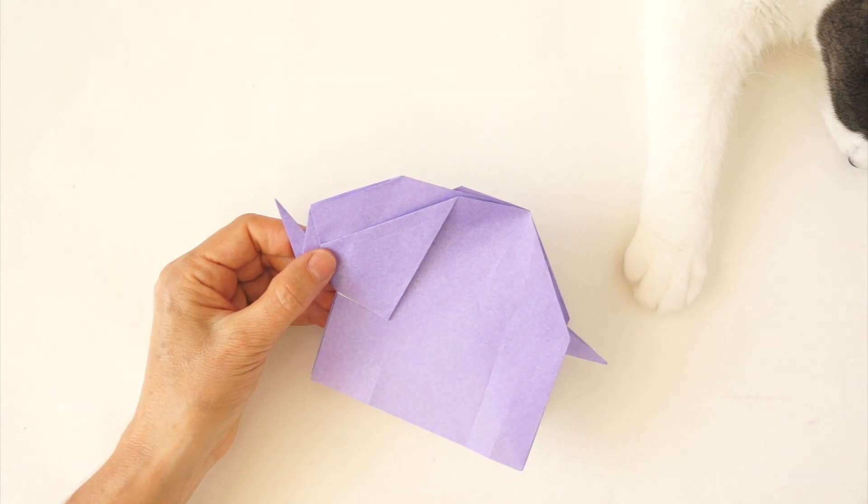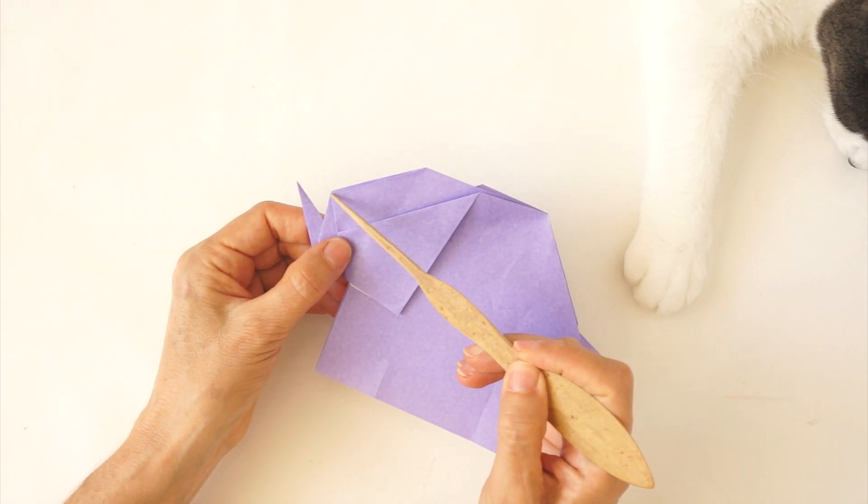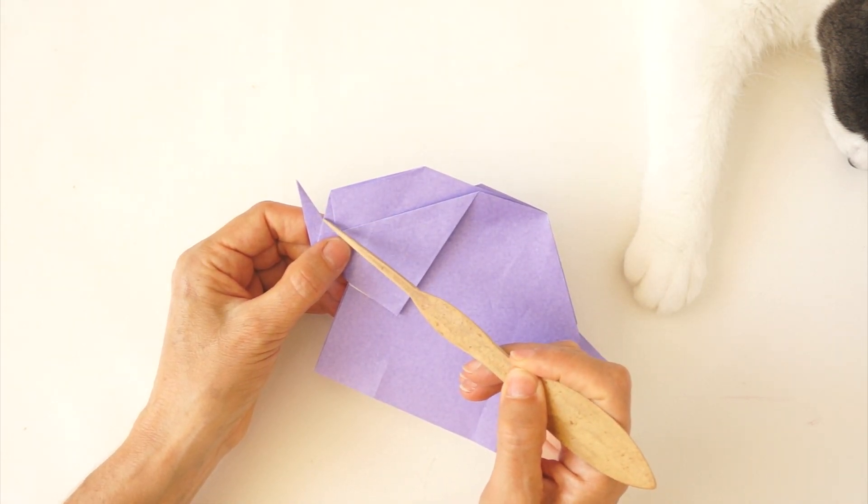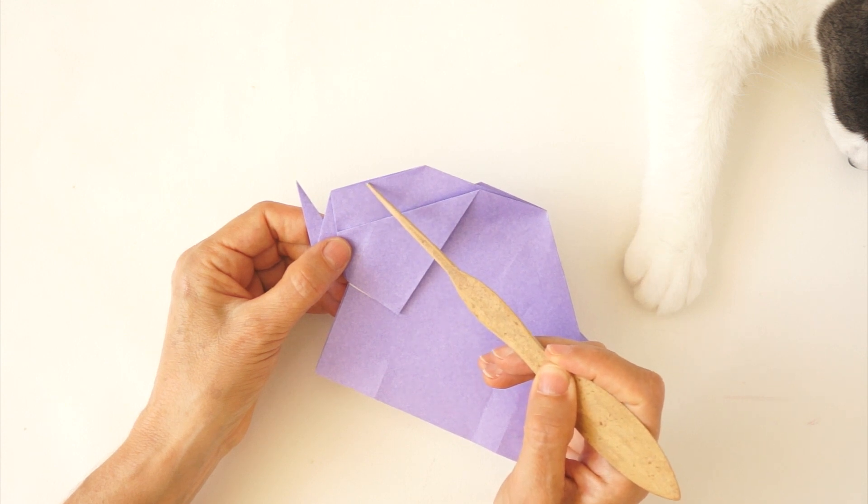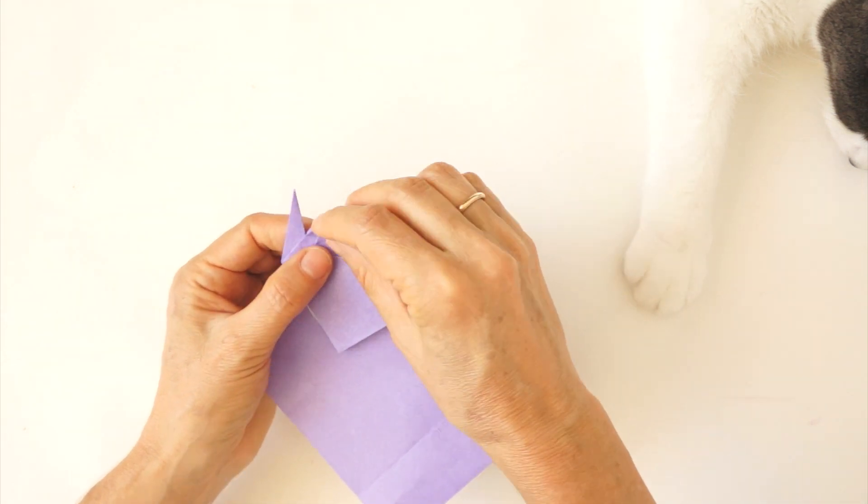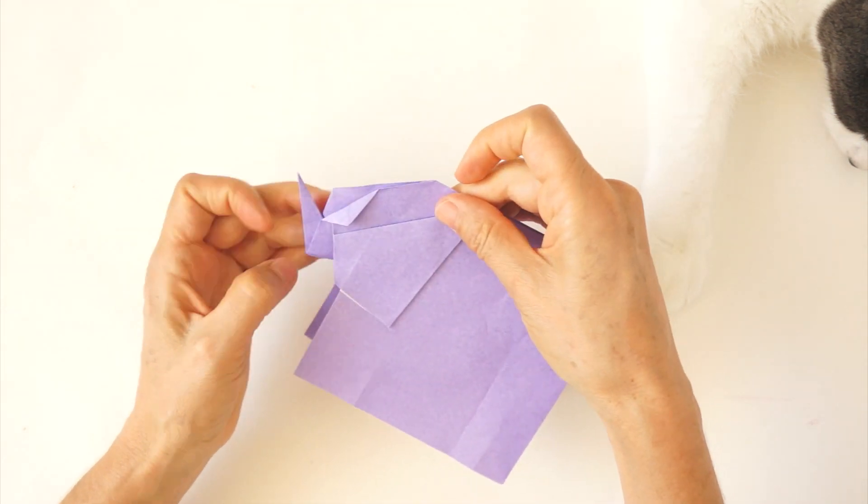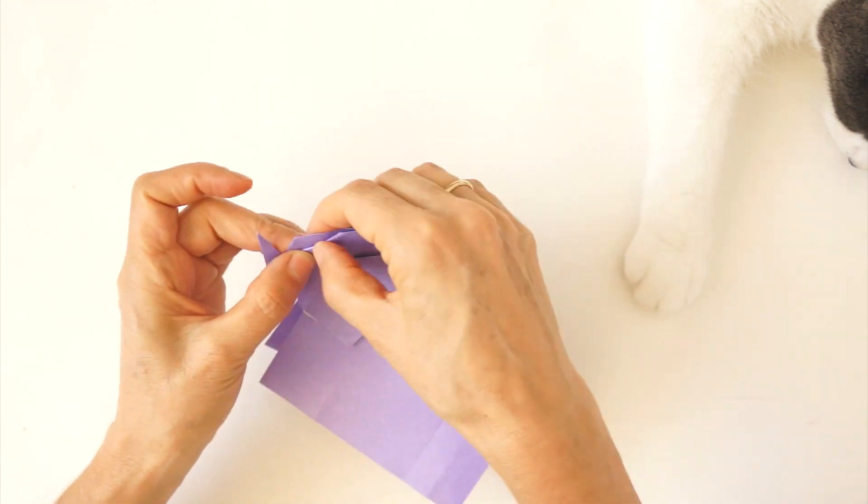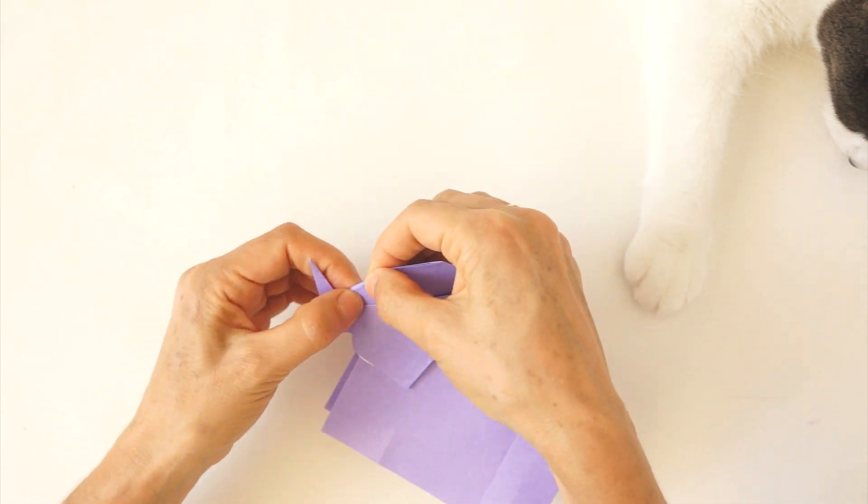At this point, we can blunt this corner by making a fold from here somewhere to here. We can fold it to the front first. Then to the back. And repeat on the back.